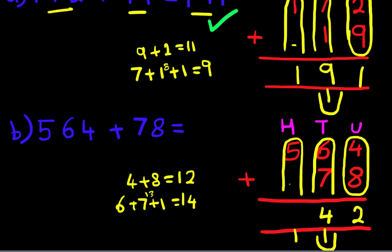There's nothing over there. And there is 1 over here. 5 plus 1 is nice and easy. It's 6. And that is our answer.